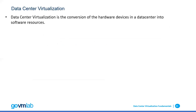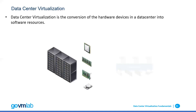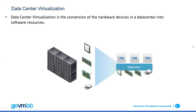Data center virtualization is the conversion of hardware devices in a data center into software resources. What are we trying to do with virtualization? If you take any physical server, it will have a CPU, memory, network, and hard drive. With virtualization, what VMware has done is they have virtualized these physical hardware devices into software resources. That's the whole idea of virtualization.